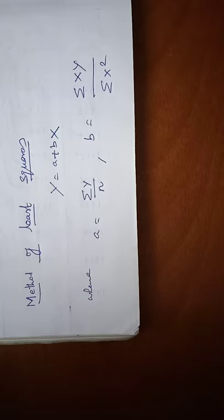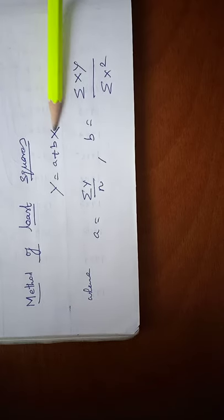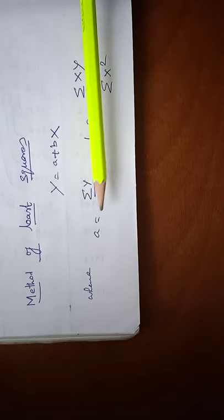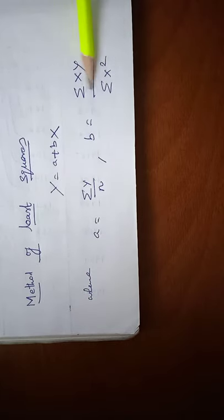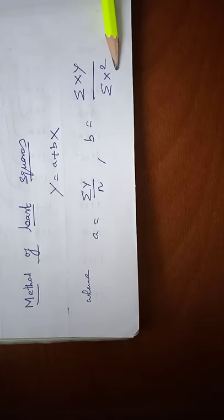The method of least squares. The equation of line Y equal to A plus BX, where A is given by the formula A equal to sigma Y by N, and B equal to sigma XY by N divided by sigma X square.